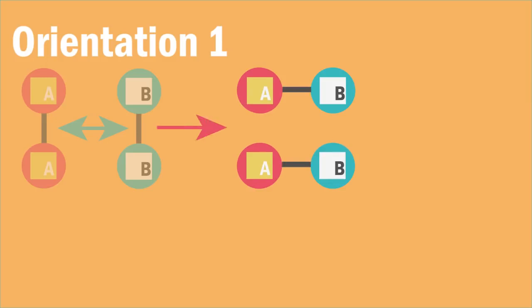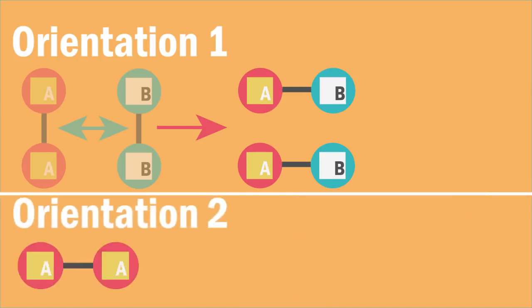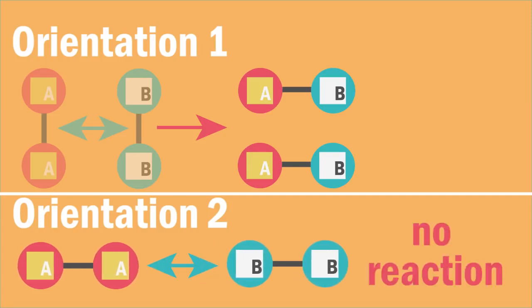In orientation 1, the two diatomic molecules, A2 and B2, are in the correct orientation to react. In orientation 2, they are not, and so no reaction occurs.